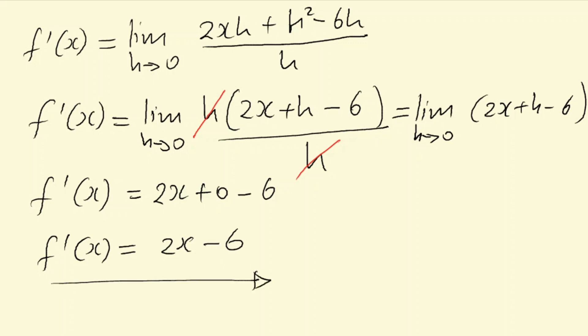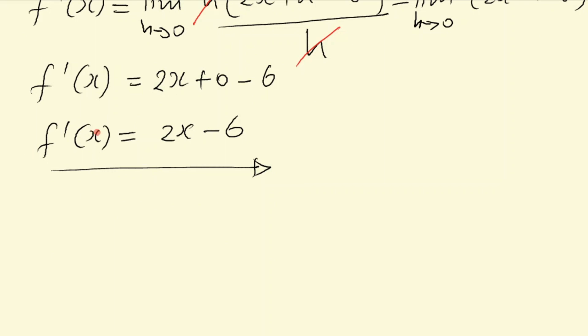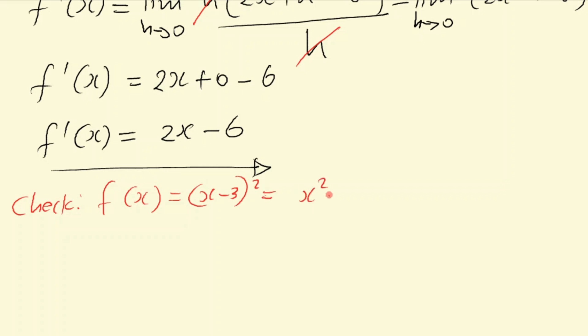That was a long process! I'm glad we got to the final answer. If I lost anyone along the way, feel free to comment below and I'll get back to you. You can actually confirm this answer using the power rule. Given f of x equals x minus 3 squared, which expanded to x squared minus 6x plus 9, we'll apply the power rule method now.